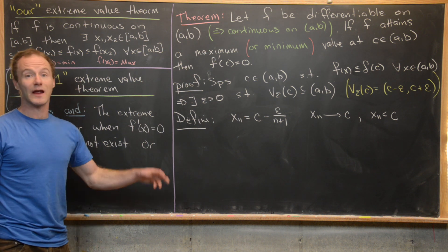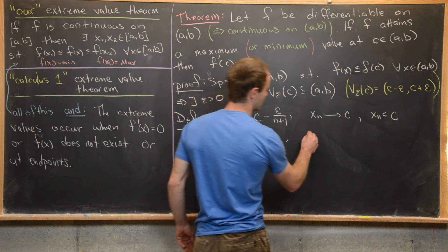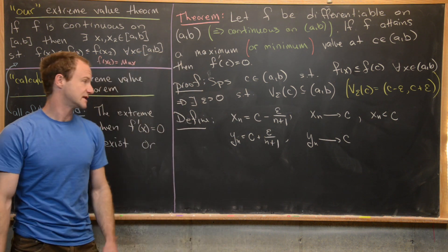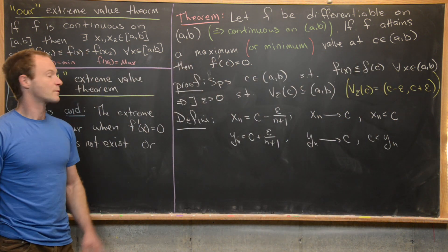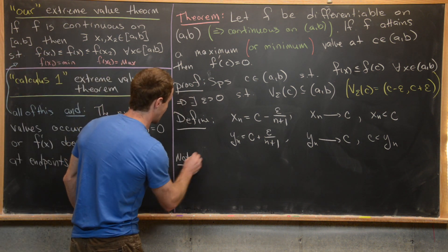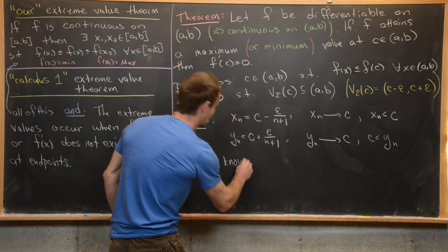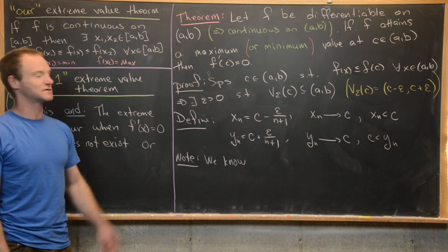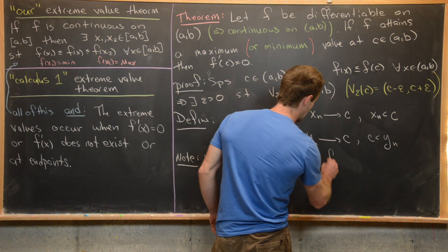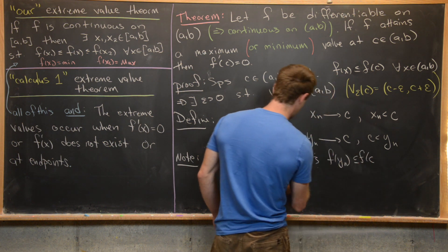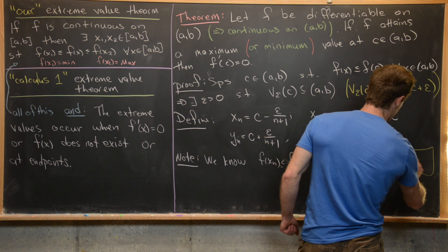Similarly, define y_n = c + ε/(n+1). Notice that y_n also converges to c, and all y_n are greater than c since they equal c plus a positive number. Now, since f(c) is a maximum, we know that f evaluated at the values of both sequences gives values less than or equal to f(c). That is, f(x_n) ≤ f(c) and f(y_n) ≤ f(c) for all n — because f(c) is a maximum.